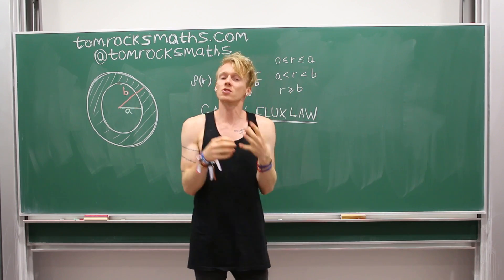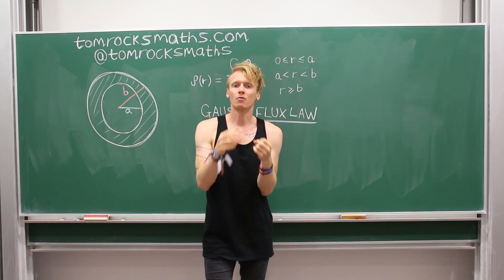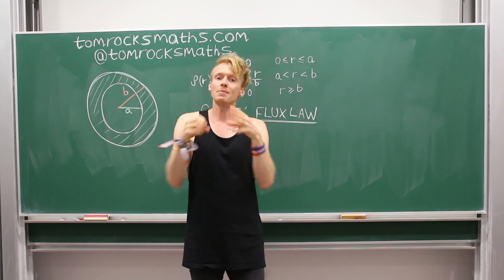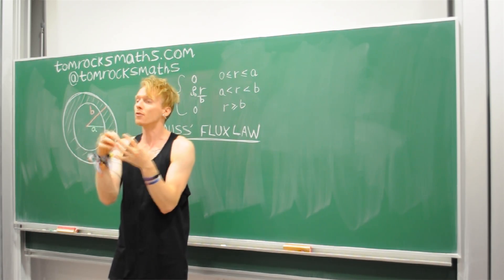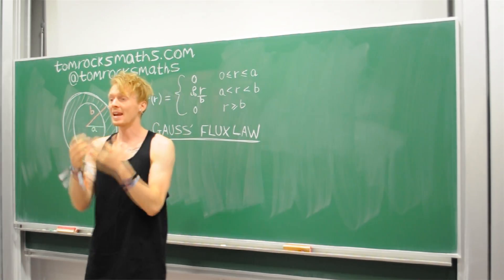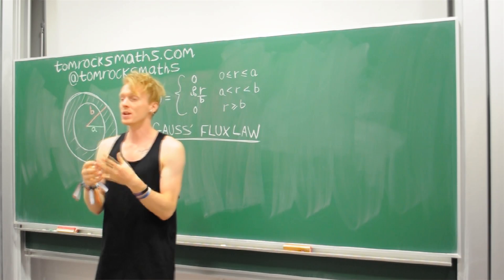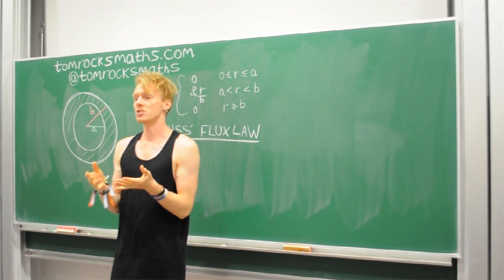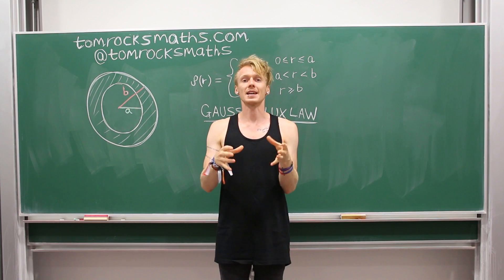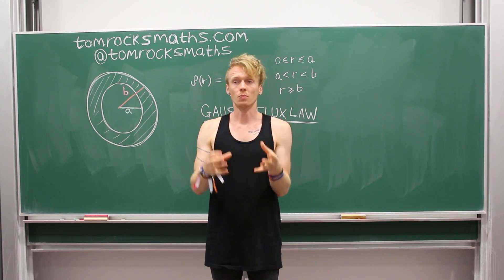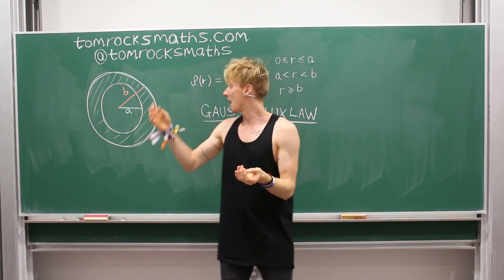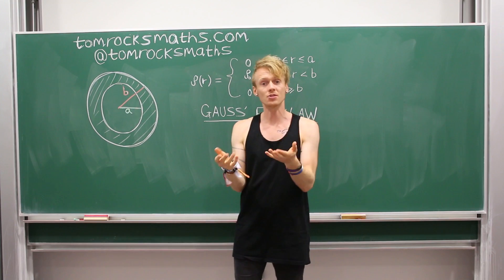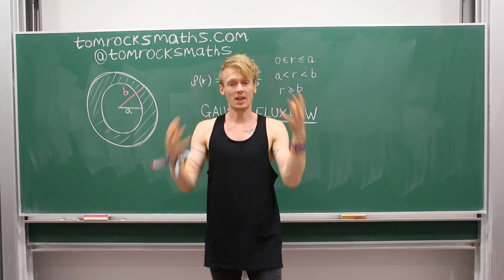And Gauss's flux law is very general, but rather than writing down the general form, I'm just going to write down the particular form that we need, because it simplifies a lot when you have two particular conditions. The first condition is that your object is a sphere. So the Earth is a sphere, and our hollow Earth is also a sphere. So that's OK.